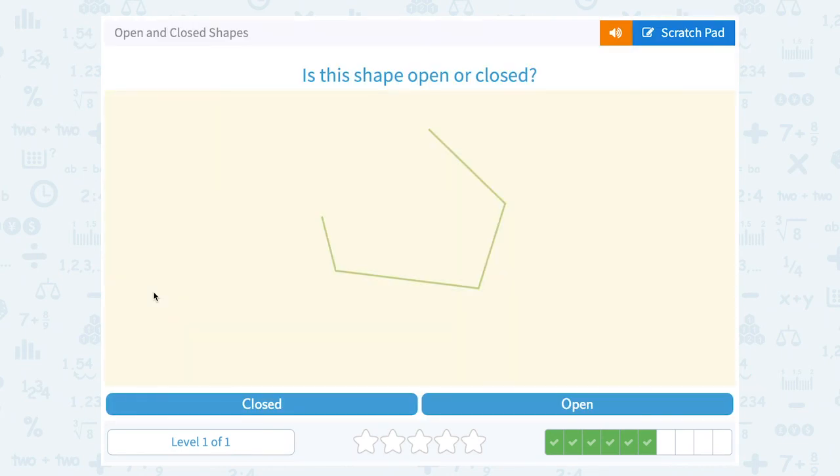This would also be an open shape, you see the big space here, or opening, right? That's why it's called an open space, where these segments are not connected.